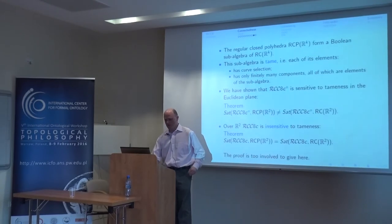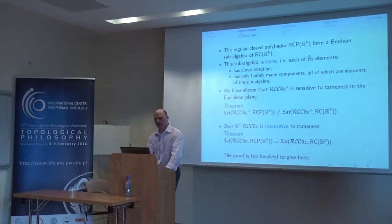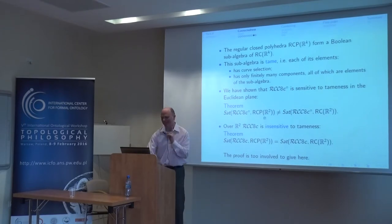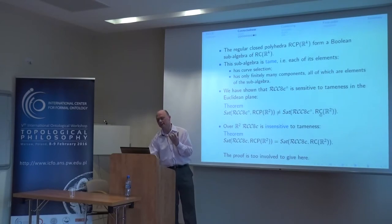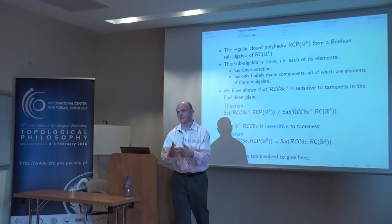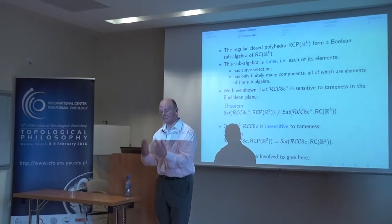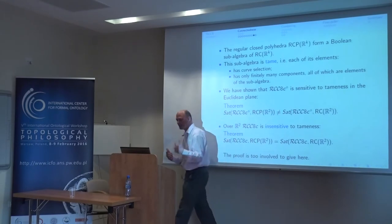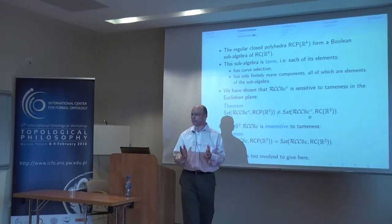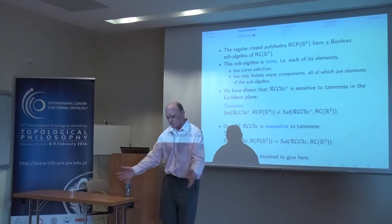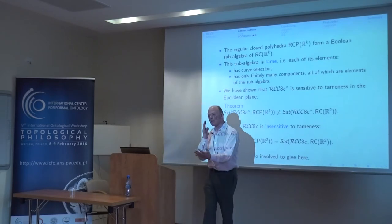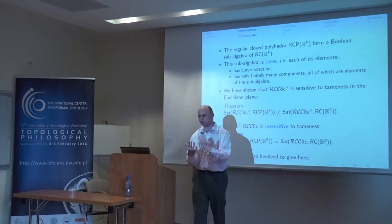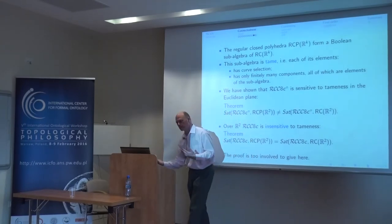So what do we know? I've just given you an example which shows that for the language RCC8 plus interior connectedness, the satisfiability problem for the regular closed polygons is not the same as the satisfiability problem for the regular closed sets in the plane. There are sets of constraints which are satisfiable in the regular closed sets in the plane but not over polygons — not over tame regions. That's a bit of a surprise. This is a very simple language — just ordinary RCC8 with these six relations, no logic, no quantifiers, no Boolean connectives — and already that language can distinguish polygons from non-polygons.